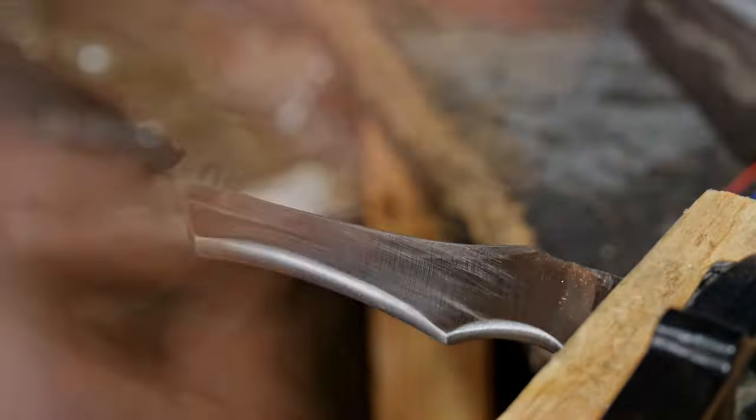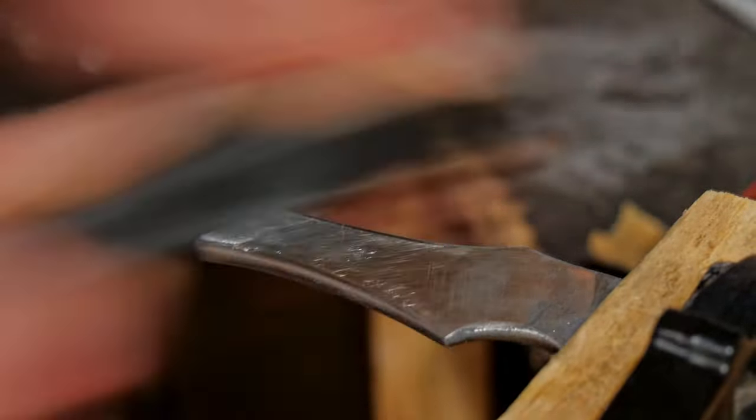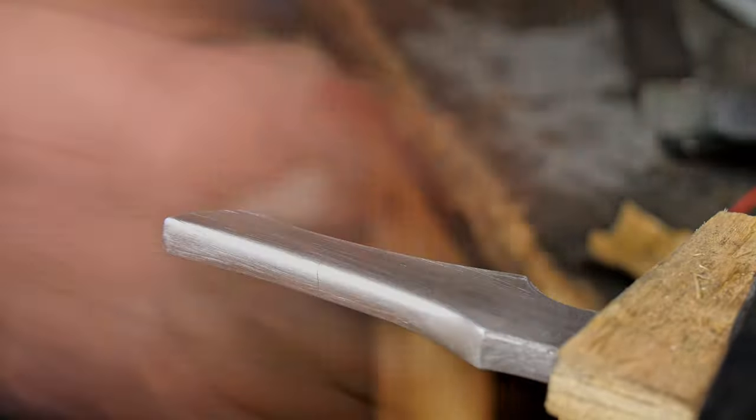It was then time for the hand sanding to give a really nice finish before the heat treat. Using silicon carbide wet and dry paper I went from 240 grit all the way up to about 600 grit.